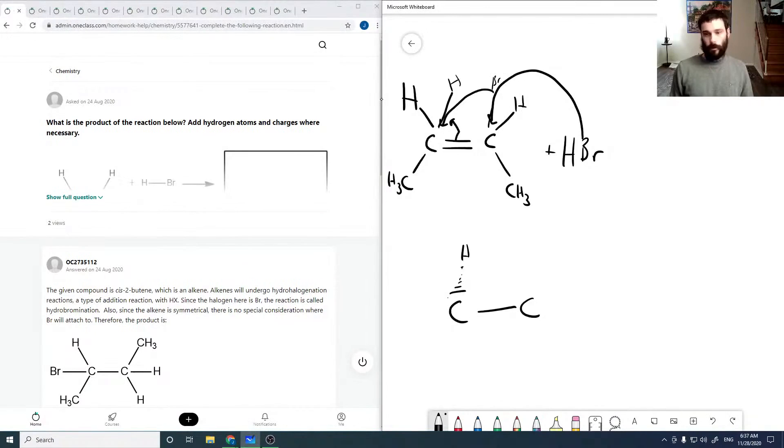I've used these dashes and wedges to signify that they're coming out of the page or into the page. I'm putting the CH3 groups as far away from each other as possible, assuming they would be the most repulsive. So the final structure would look something like this.